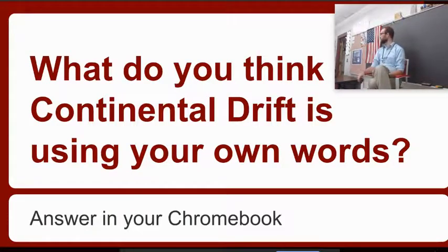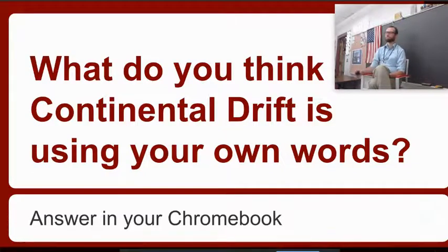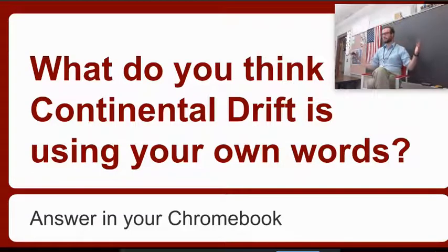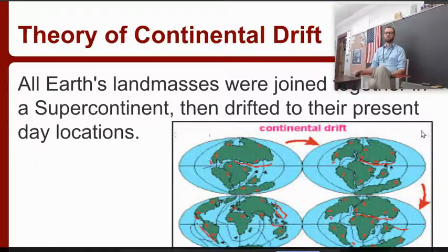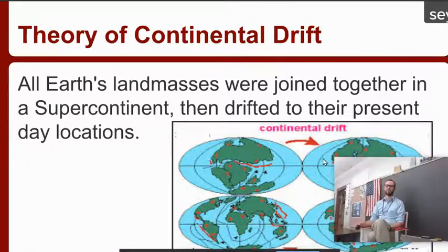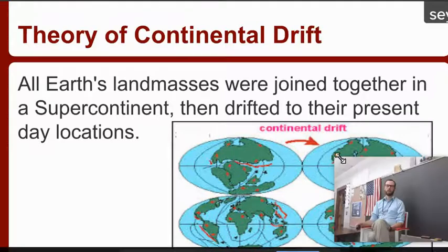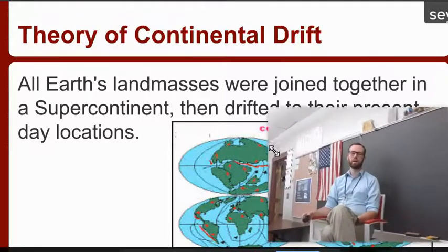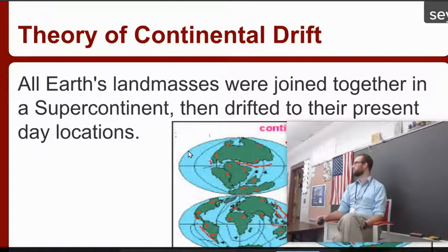We did a little bit of a Pangea gizmo yesterday that talked about that. When the continents drifted apart — continent drifting. So she said splitting, and that's fine. Continents are splitting apart. So here's the actual definition: the theory of continental drift is that all Earth's landmasses were once joined together in a supercontinent, and then they drifted to the present location.